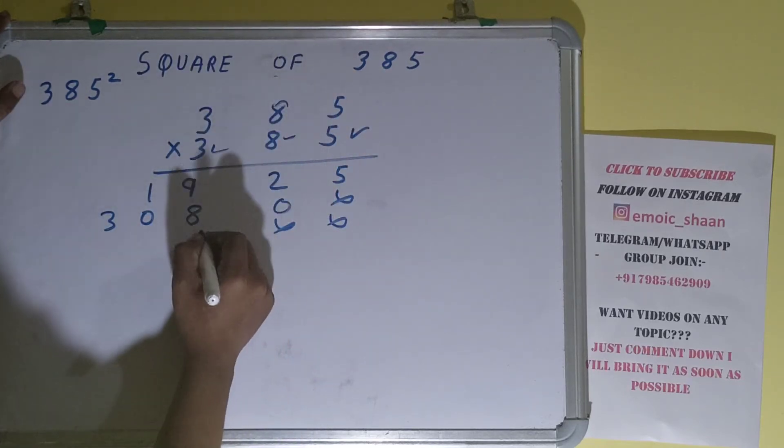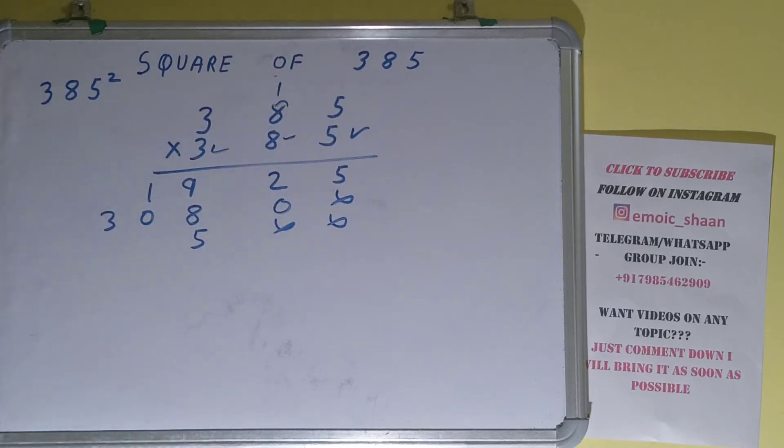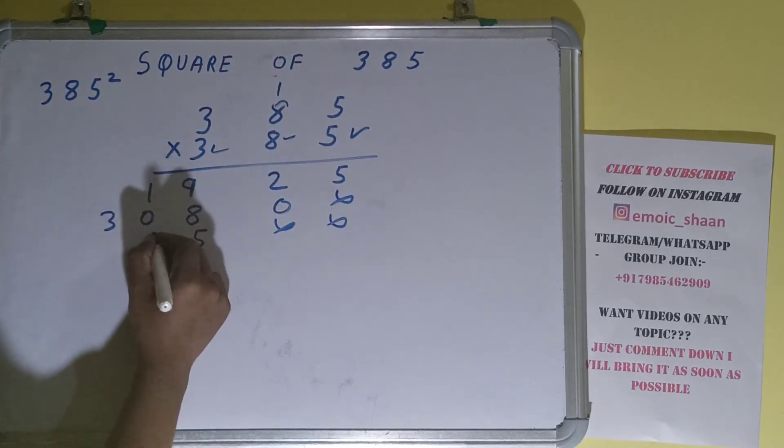Now this 3: 3 times 5 is 15, 1 carry. 3 times 8 is 24 plus 1 is 25, 2 carry. 3 times 3 is 9 plus 2 is 11.